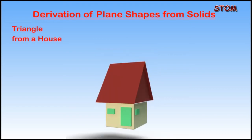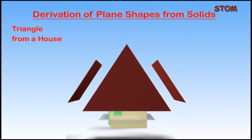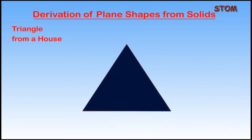The roof of some houses are triangular in shape, and a triangle can be derived from its surface. You can see how this is derived from the diagram.